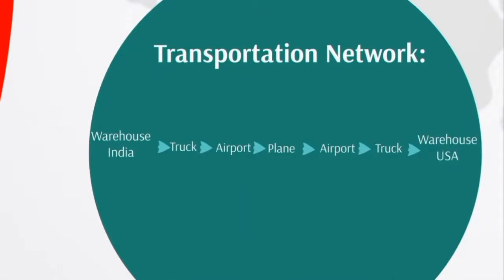Transportation network. A transportation network shows how a product is transferred from one point to another. For example, a product is transferred from the warehouse of India to the warehouse of the USA. From the warehouse of India it is transferred to the airport by truck, then by plane it is transferred to the airport of the USA, and by truck it is transferred to the warehouse of the USA.